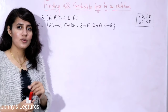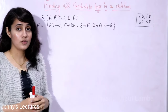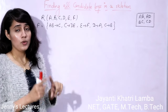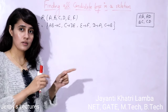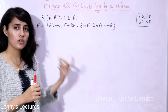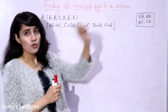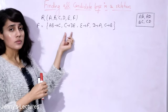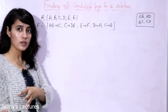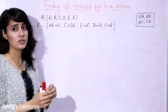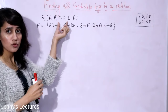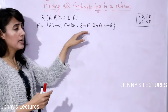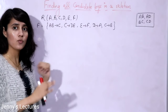In the previous video we discussed how to find all the candidate keys from a given relation using a short trick. A question was given in the last video: find the number of candidate keys present in the given relation and what those keys are. The answer is that four candidate keys are present. Now we will take a complex problem and use that shortcut to find out the number of candidate keys in a given relation with these attributes and these functional dependencies.